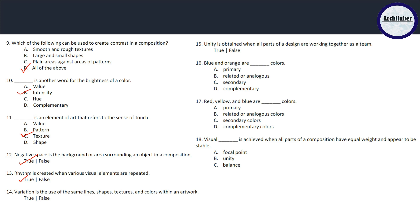Variation is the use of same lines, shapes, textures - no, variation does not mean the same, so it is false. Unity is obtained when all parts of a design are working together, which is true. Blue and orange - we have discussed color theory, so you better tell these two answers in the comment section below.